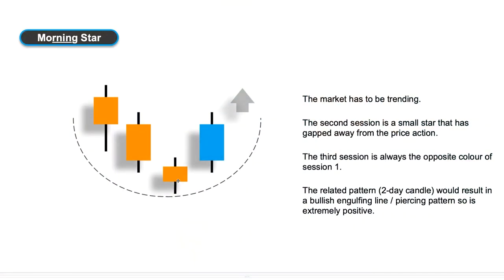The next candlestick formation is the morning star. The morning star is a very small candle at the bottom of a trend with a real body attached. You can see a downward trend occurring, and the morning star's small real body signals that the momentum of that downward trend is slowing — there's a little bit of indecision and the trend may be finishing. Confirmation is required: the next candle needs to be a blue or up candle, which confirms the morning star formation and gives you a potential trade on the upside.